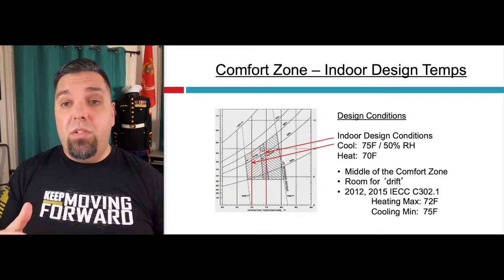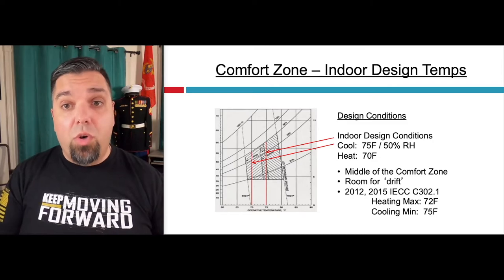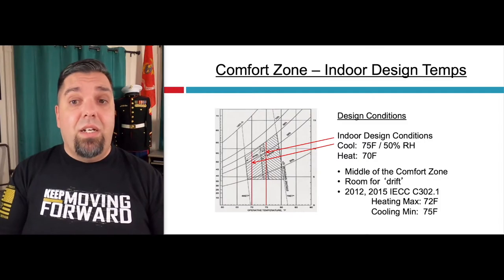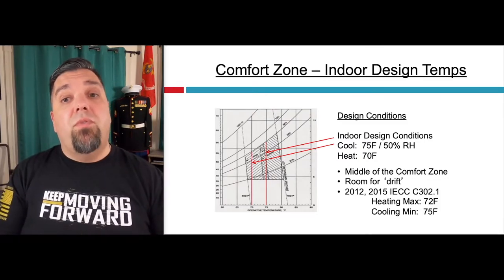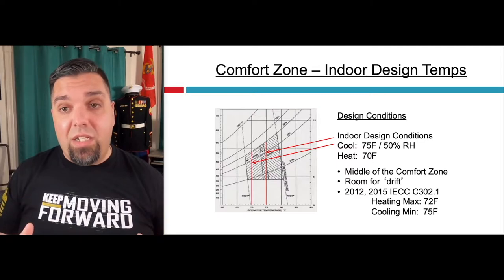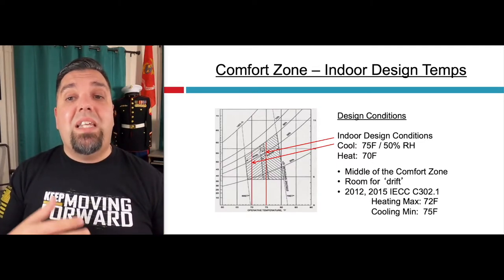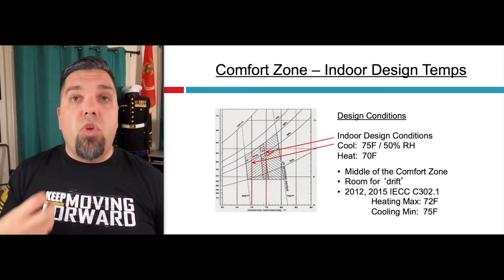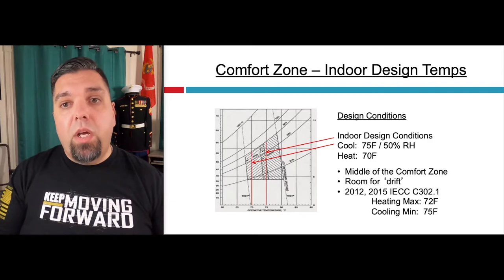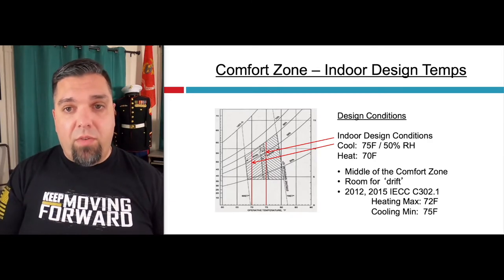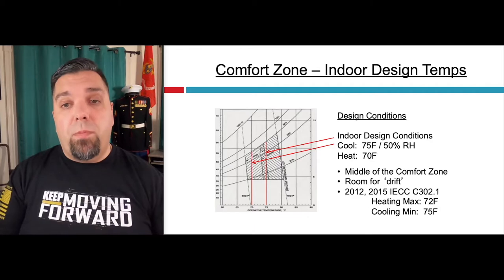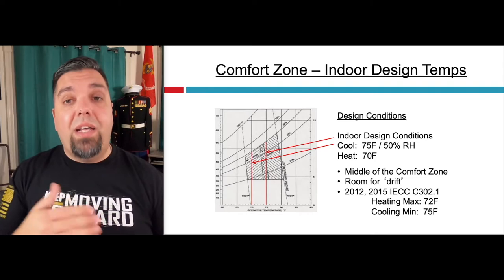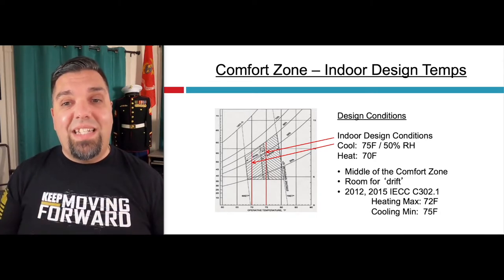This is not negotiable when it comes to code — the International Mechanical Code, IECC, and IRC (International Residential Code). 75 degrees and 50% relative humidity is what we design to on the interior. If you're in a really humid climate like Miami, that could be 55% relative humidity; in a dry climate like Arizona, maybe 45%. But the majority of the country operates at 50%. In heating, you can go as low as 68 or as high as 72 degrees for the inside design temperature.